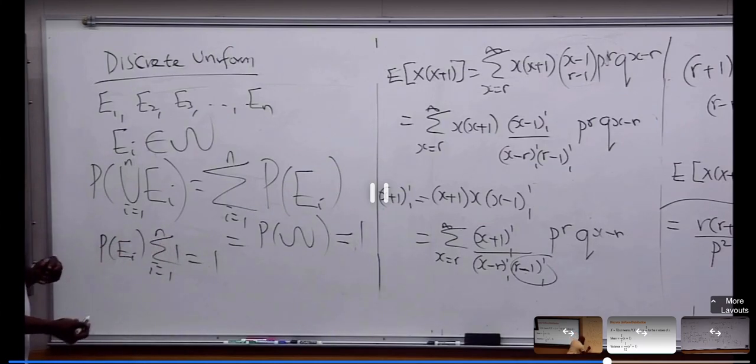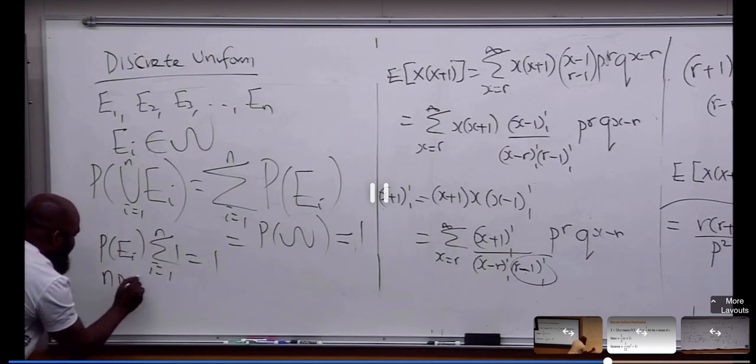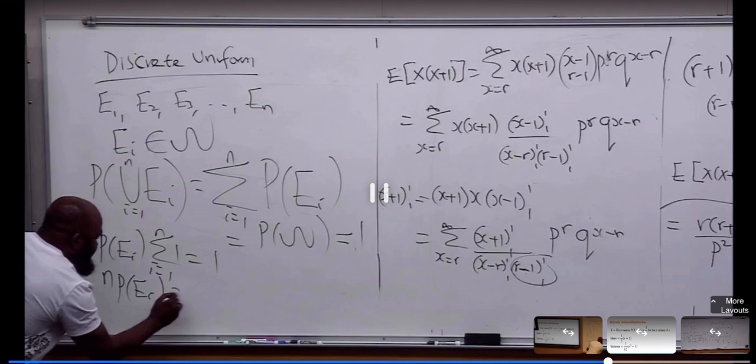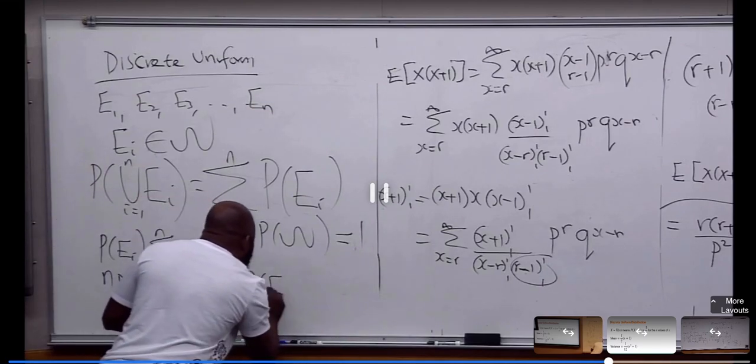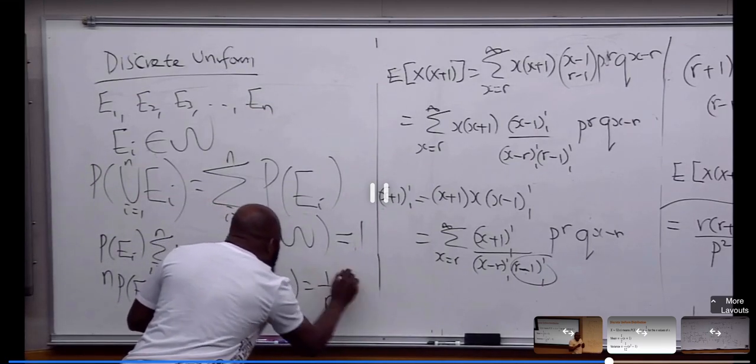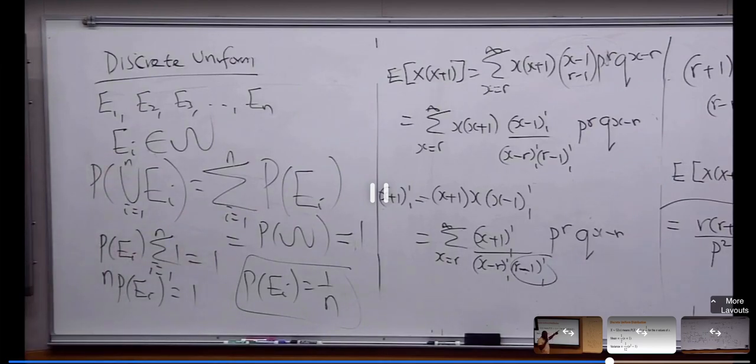Which is going to be n. And what is that? 1 over what?